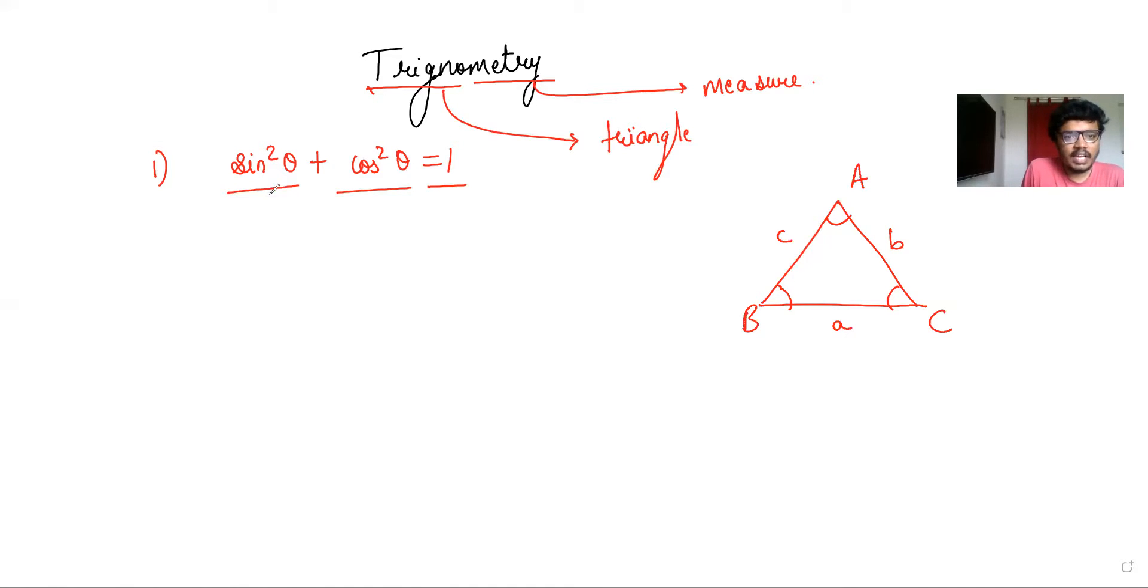Now let's try to prove this identity. So to prove that, suppose you have a right angle triangle ABC where angle B is 90 degrees. Let angle A be θ.